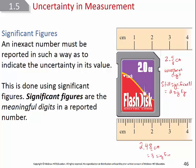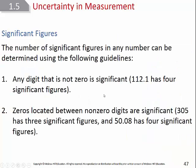The number of significant figures depends on what instrument was used. When looking at a reported number, we use rules to determine how many significant figures it has. Rule 1: any digit that is not zero is always significant. For example, 112.1 has 4 significant figures.